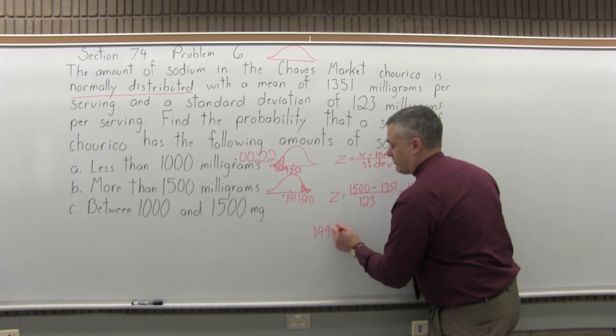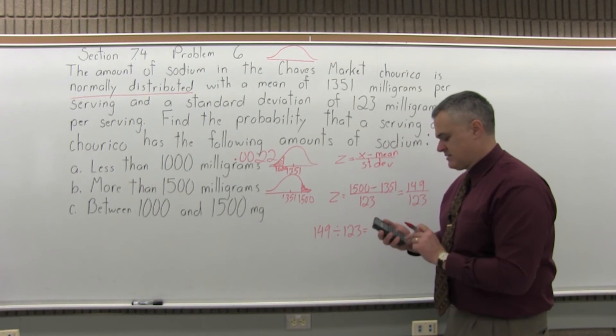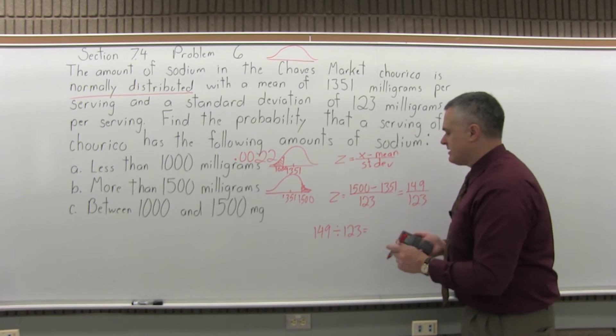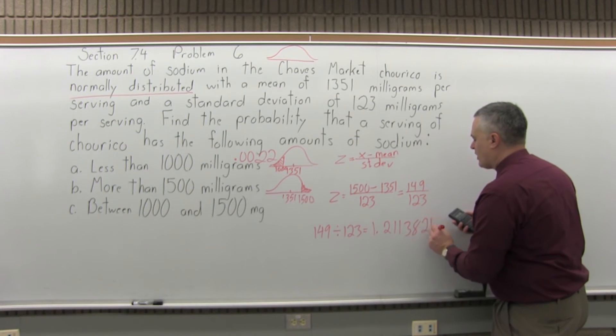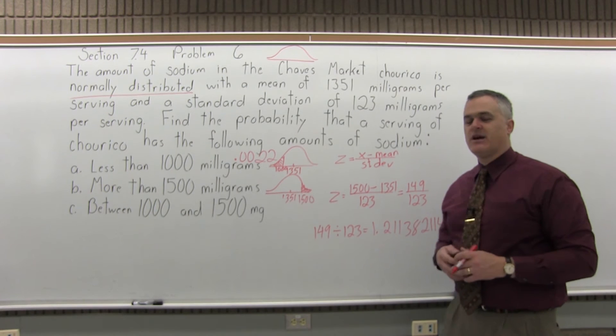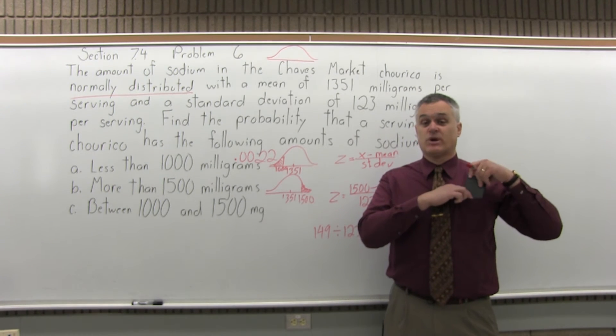The calculator will do it for me though. 149 divided by 123 equals, and the calculator says 1.211382114, that's what's on the screen of the calculator. So that's the Z-score, that's what I want to look up.